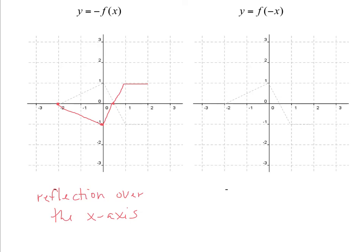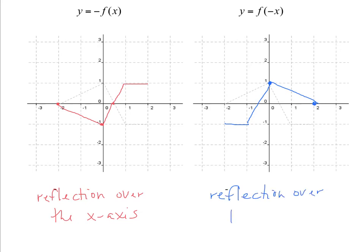In the second one, the negative is attached to the x, so pretty naturally, the x-values become positive or negative depending on where they are. The point negative two, zero becomes the point two, zero. The point on the y-axis won't change because the x-value of zero doesn't change. The point one, negative one becomes the point negative one, negative one. Two, negative one becomes negative two, negative one. So it's a reflection — if you look closely, this part reflected over the y-axis. We call that a reflection over the y-axis.